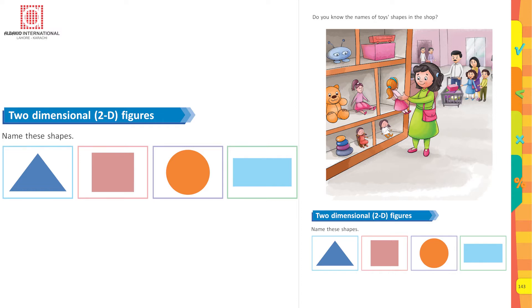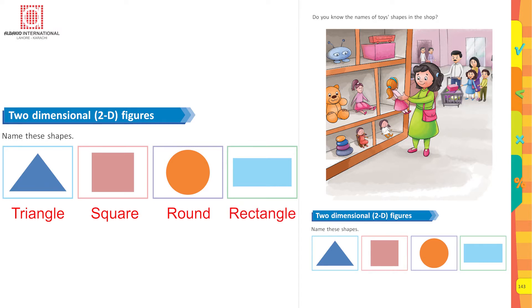The first one is a triangle, the second one is a square, the third one is a round shape, and the fourth one is a rectangle. Exactly!